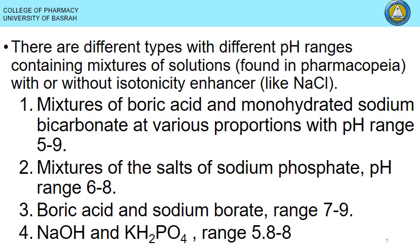There are different types of pharmaceutical buffers listed in pharmacopoeia, used with or without tonicity contributors like NaCl. Boric acid with monohydrate sodium bicarbonate gives a pH range of 5 to 9. Sodium phosphate salts provide a range of 6 to 8. Boric acid and sodium borate cover 7 to 9, and NaOH with KH₂PO₄ covers 5.8 to 8.